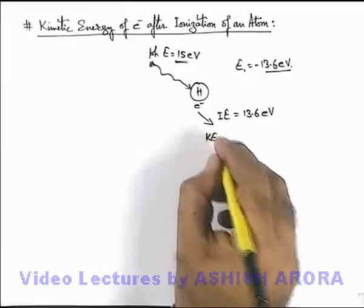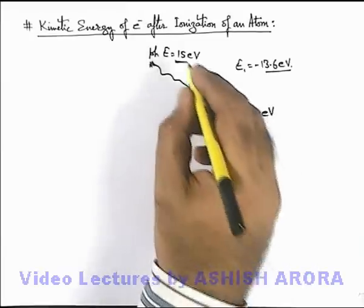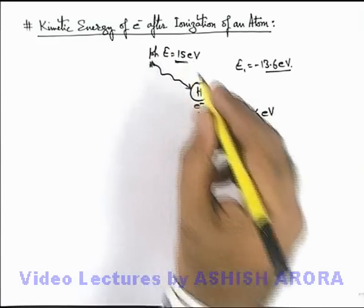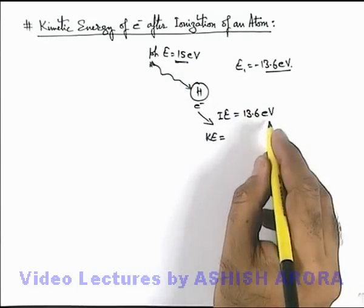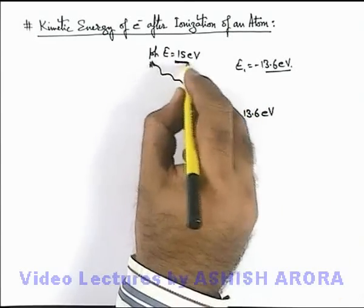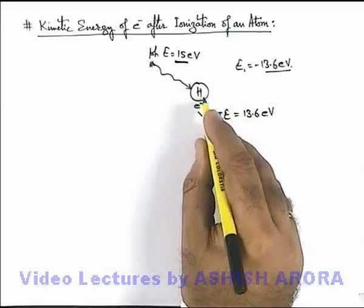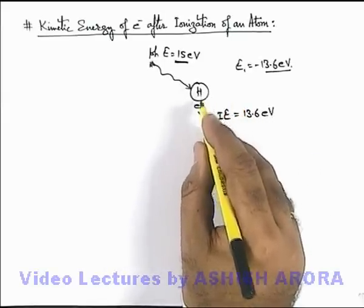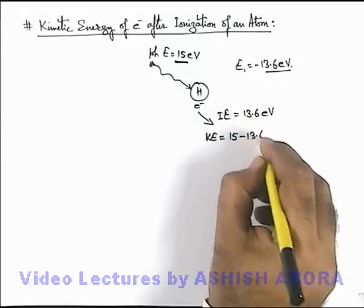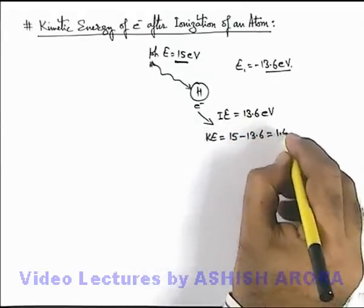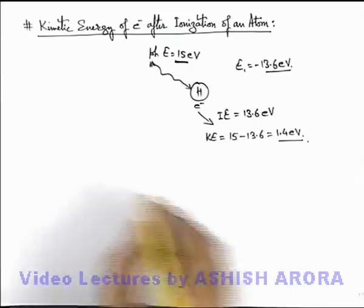And it'll have some kinetic energy, and under ideal conditions this kinetic energy will be given by the excess energy of photon above the ionization energy. Because out of 15 electron volts, 13.6 electron volts will be used to do work against the nuclear attraction, so when electron comes out its energy will be 15 minus 13.6, that'll be 1.4 electron volts.